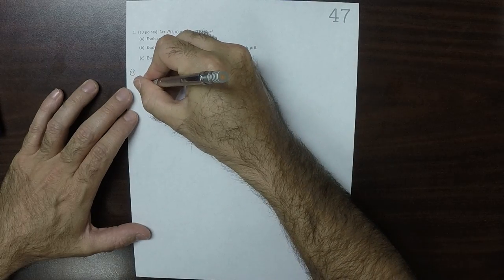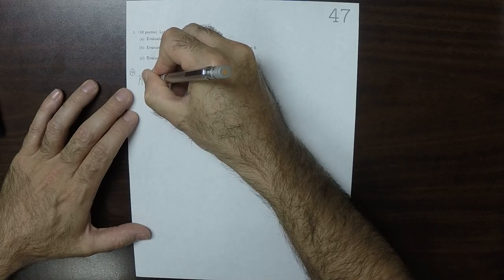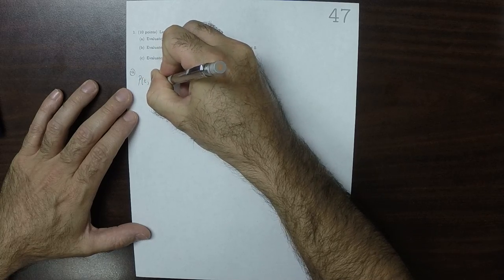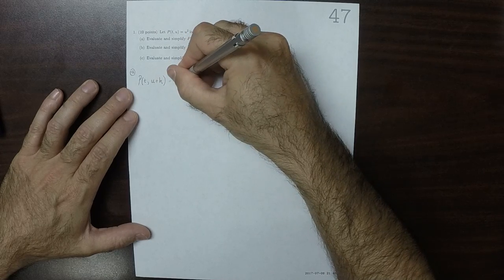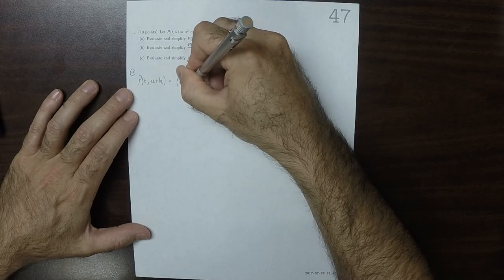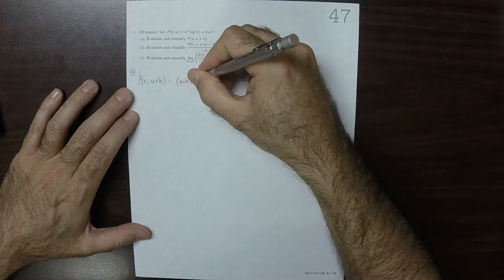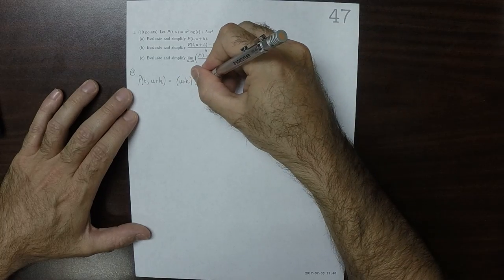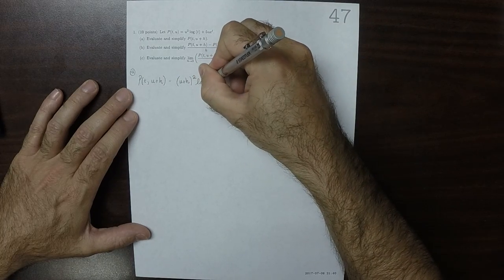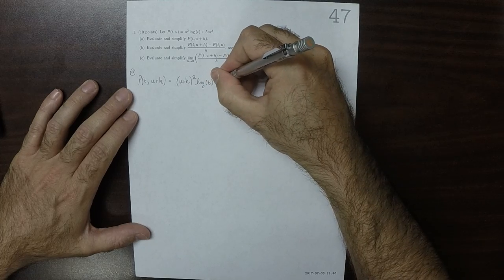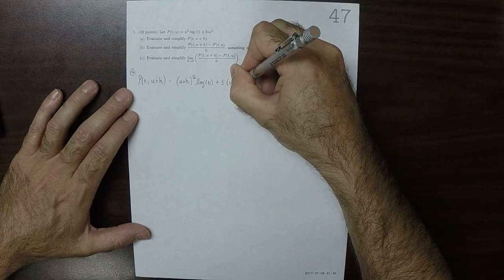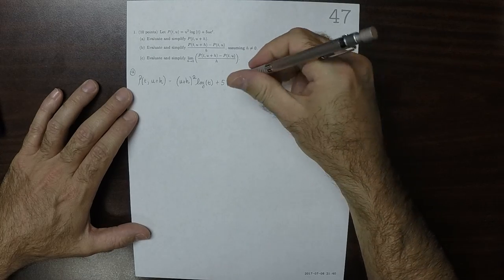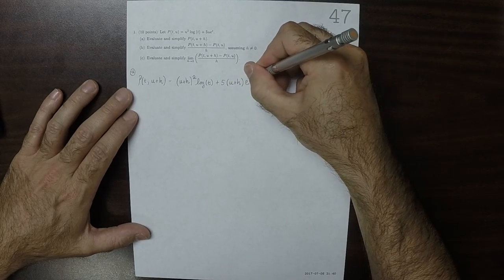So P of t, u plus h is u plus h all squared times the log of t plus 5 times u plus h times the exponential of t.